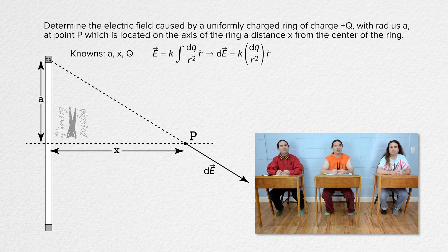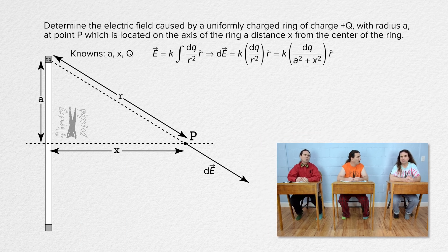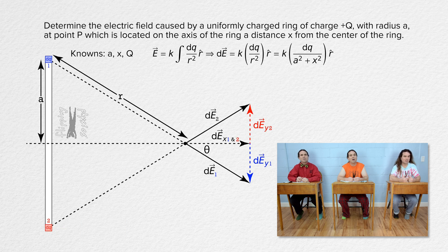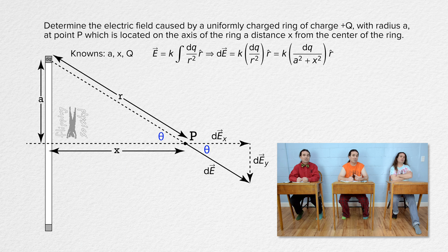The hypotenuse of the right triangle is r, so by the Pythagorean theorem we can substitute a squared plus x squared in for r squared. We can break dE into components in the x and y directions. For every dq on one side of the ring there is a dq on the opposite side such that their y-direction components of dE cancel one another out. That means the total electric field at point P is only in the positive x direction. We define theta using similar triangles so that dE in the x direction equals dE times cosine theta.